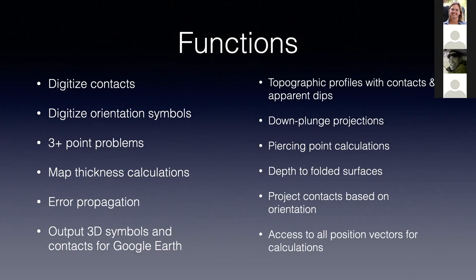GMDE can also output 3D symbols and contacts to Google Earth. We can draw topographic profiles with contacts and apparent dips on them, and project contacts onto vertical cross sections using a cylindrical fold model. We can also do down-plunge sections, do piercing point calculations, calculate depth to folded surfaces, and project contacts based on orientation.